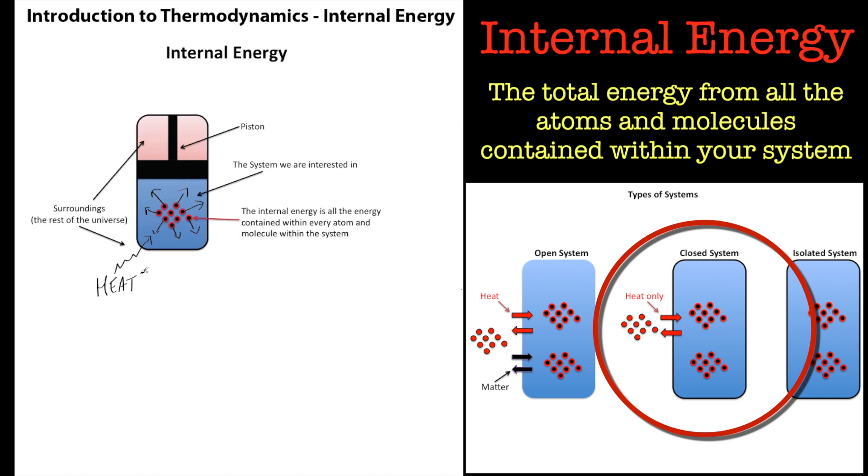Then what that will do is heat will provide energy to the atoms and molecules and make them move around chaotically and randomly. But it'll increase the energy of the system. So we've put energy in the form of heat.